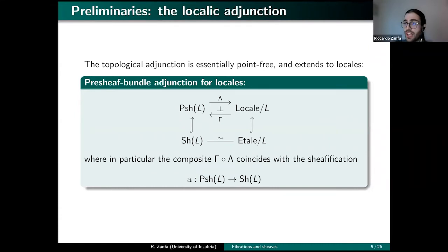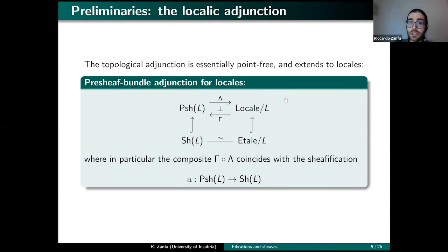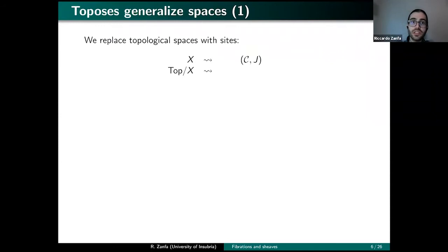We now want to do the same for all sites. Once we have a general adjunction where instead of L we have any site (C, J), we can recover the sheafification using the two adjoints. This adjunction will be both a generalization of the topological results and a restriction of the fundamental adjunction living at the two-categorical level of fibrations. The first question is: if we substitute a topological space X with a site, what takes the place of bundles over X? We use the general mantra that toposes are a generalization of spaces, so we take toposes over the base topos of sheaves for our site.